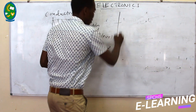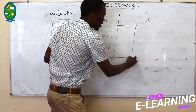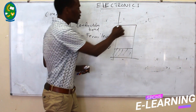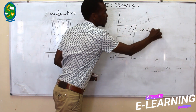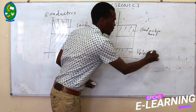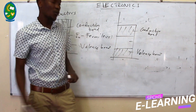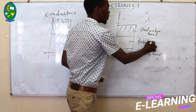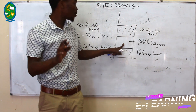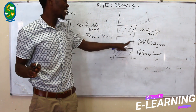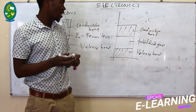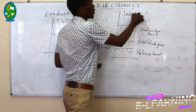For insulators, we have the same energy bands, but between them we have a very large gap. The upper one is the conduction band, the lower one is the valence band, but between them we have a forbidden gap. In this forbidden gap, no electrons either from the conduction band or from the valence band can exist. Electrons can either be in the valence band or in the conduction band. This is the energy band structure for insulators.